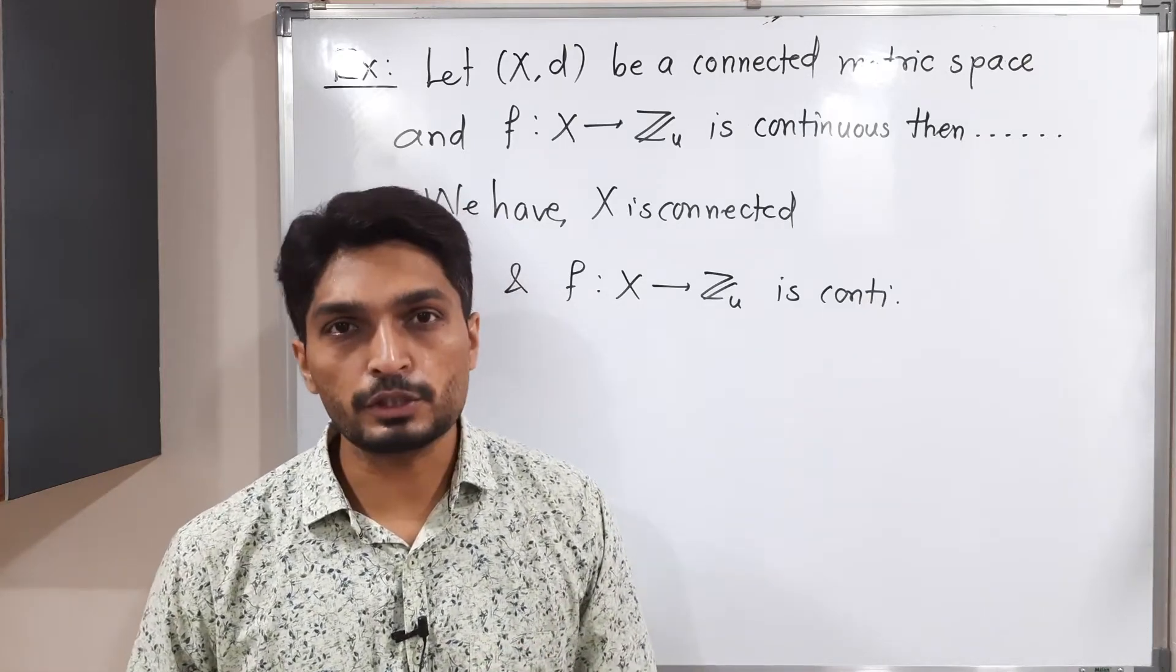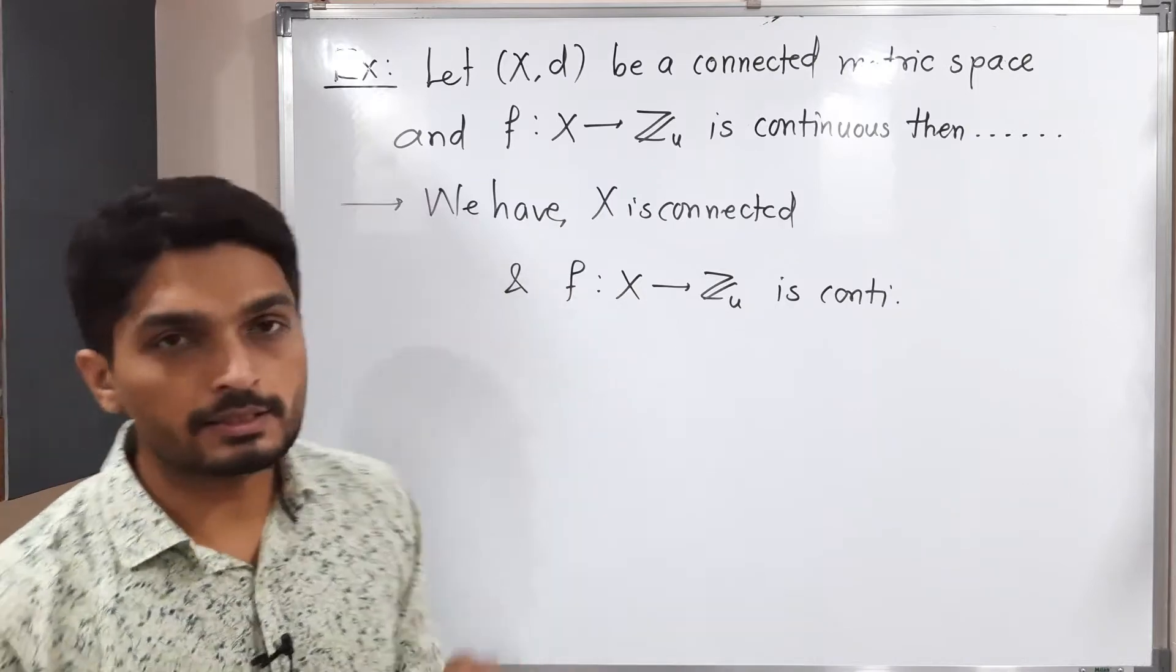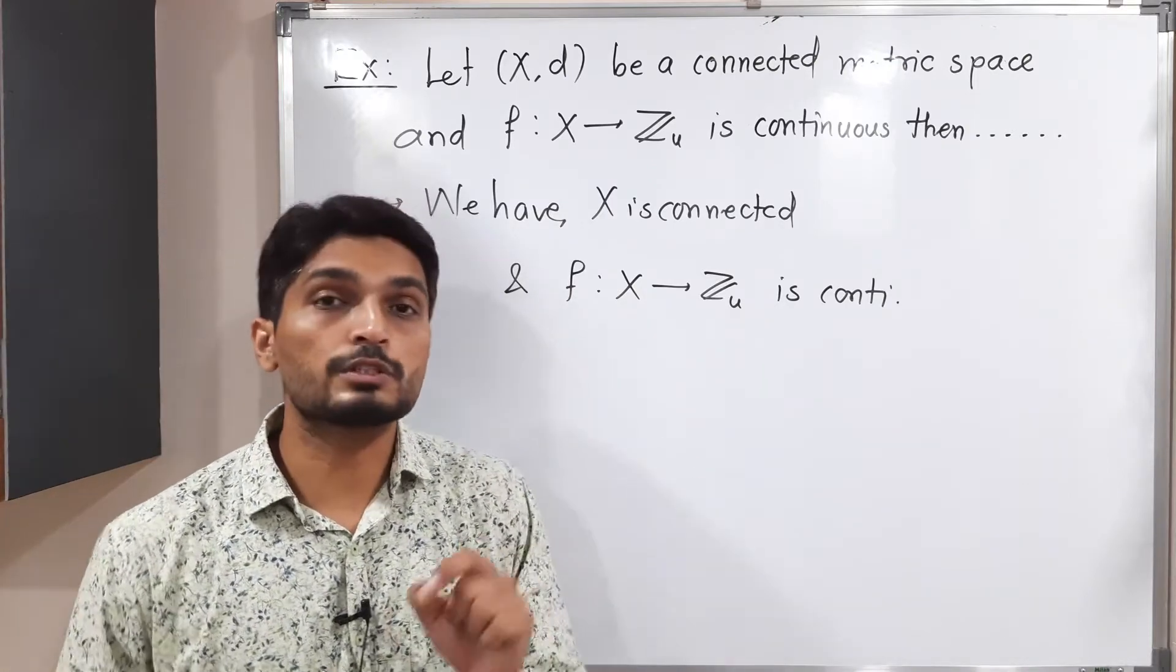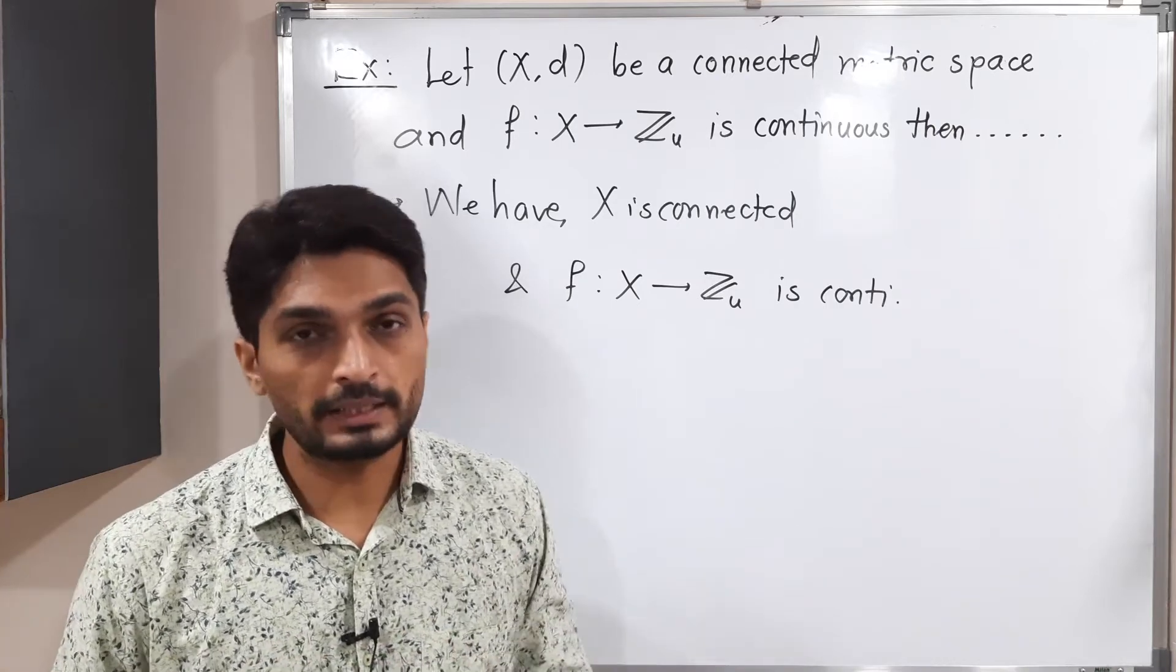Let us start with the given information I have already written here. X is a connected metric space and a second information is that function which is defined from X to Z, that is a continuous function.